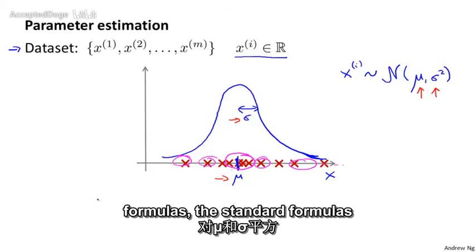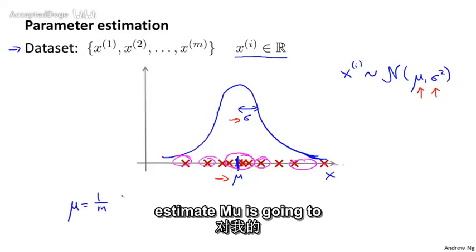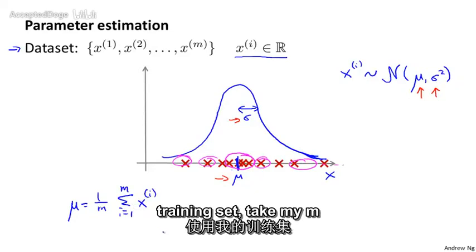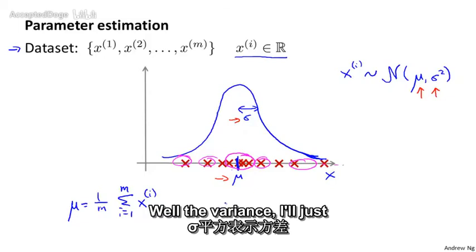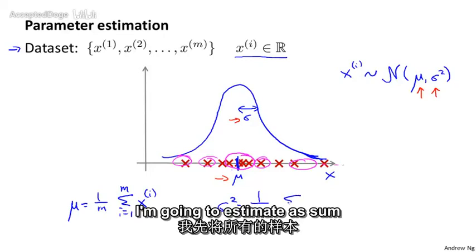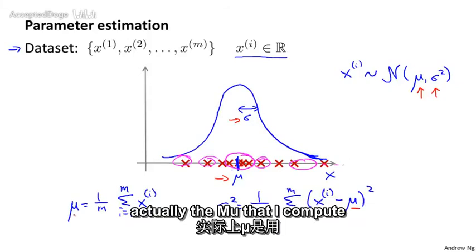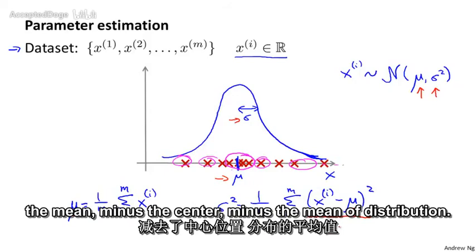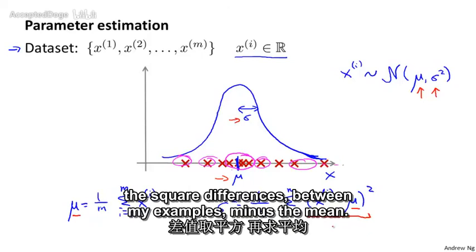I'll write out the standard formulas for estimating the parameters mu and sigma squared. We estimate mu as simply the average of my examples: sum over the m training examples and divide by m. For sigma squared, the variance, I estimate it as the sum from 1 through m of (xi minus mu) squared, divided by m. The variance is essentially the average squared difference between each example and the mean.